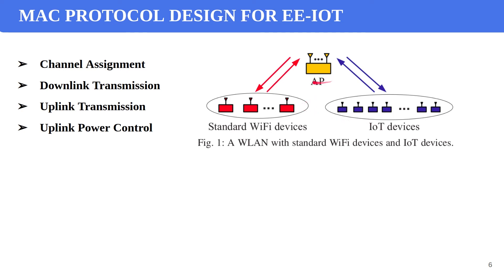By doing so, an access point can receive similar signal power from IoT devices on different channels, and this mechanism improves the performance of the access point's signal detection. Overall, this paper had some generic information, but the important part was the MAC protocol design.